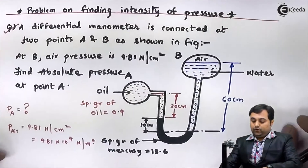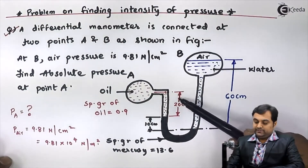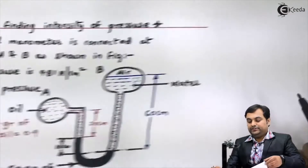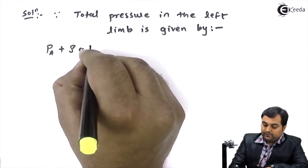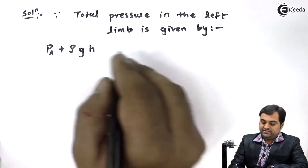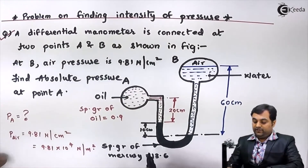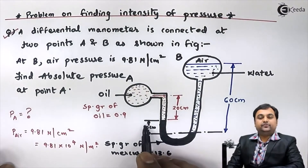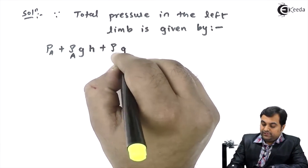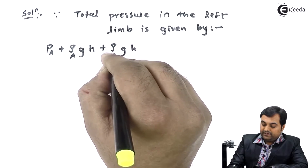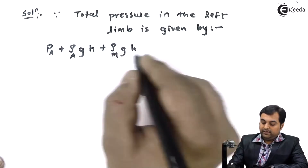Oil is filled up to 20 centimeters height as we can see, so there is pressure exerted by this oil column. We write: plus rho_oil × g × h_oil. Next, in the left limb we also have mercury up to 10 centimeters, so we add the mercury column pressure: plus rho_mercury × g × h_mercury. This gives the total pressure in the left hand side.